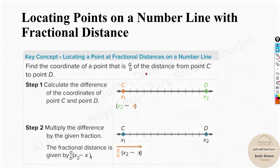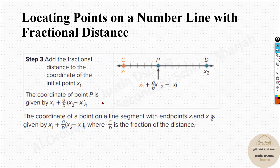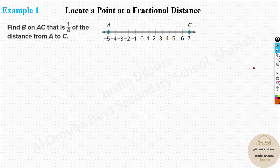Here is the derivation of the formula. The distance in coordinates x2 minus x1 gives the total distance. When you multiply by the fraction, you get the fractional distance. The formula is: x1 plus (a/b) times (x2 minus x1). That's it — we just add the fractional distance to the initial point x1. Let's look at a problem and you'll see how easy this topic is.